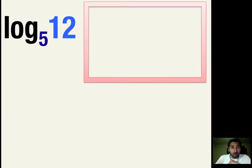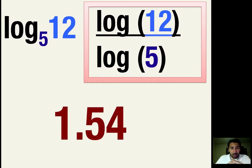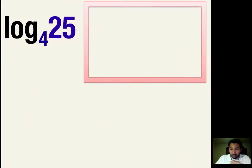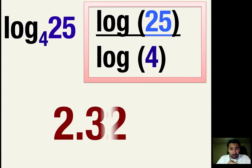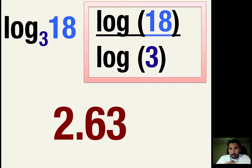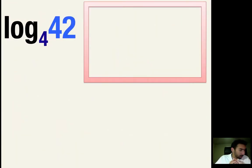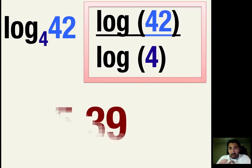For the first problem, notice the base is in the bottom, and you get approximately 1.54. Log base 4 of 25 should have log(25) over log(4), giving 2.32. Log base 3 of 18 gives approximately 2.63. And log base 4 of 42 set up with the base in the bottom gives approximately 2.71. Notice your bases are in the bottom in all of these.